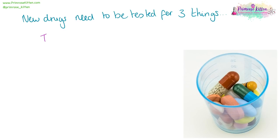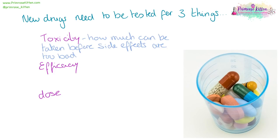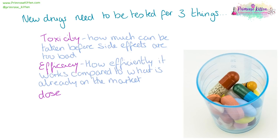New drugs need to be tested for toxicity, efficacy, and dose. Toxicity tells us the level or amount of the drug we can take before the side effects are too bad — all drugs we take on a daily basis have side effects, but since we know how toxic they are, we know a safe level to take them at. Efficacy is how efficient it is — does it work better or worse than what's already on the market, and is it worth developing? Dose is how much you need to take for the drug to be effective.